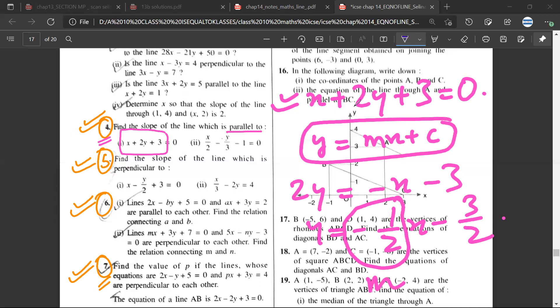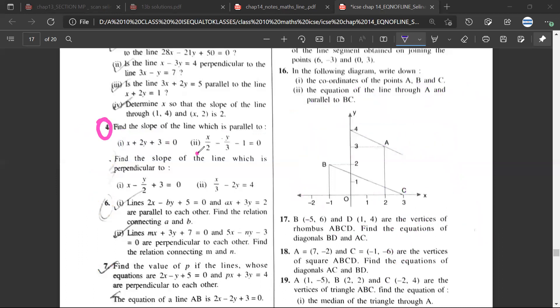Now this is the same kind of question: x upon 2 minus y upon 3 minus 1 equals 0. So you need to know how to do it. If you practice a little, it will come to you.